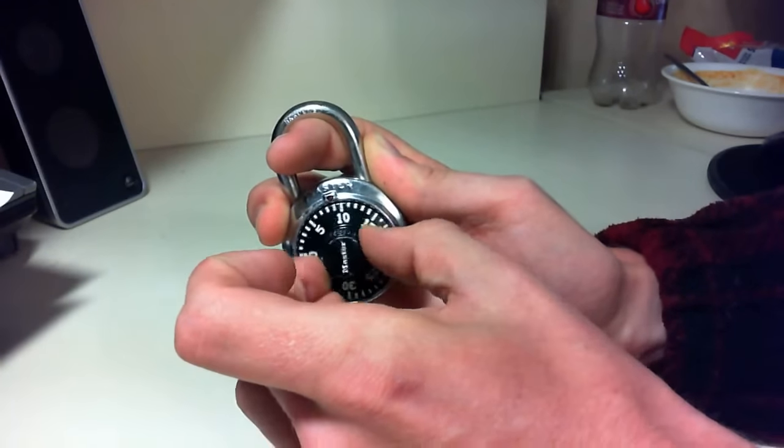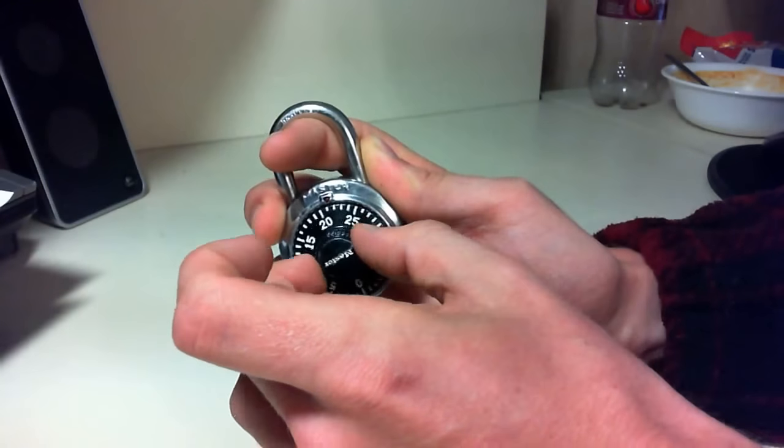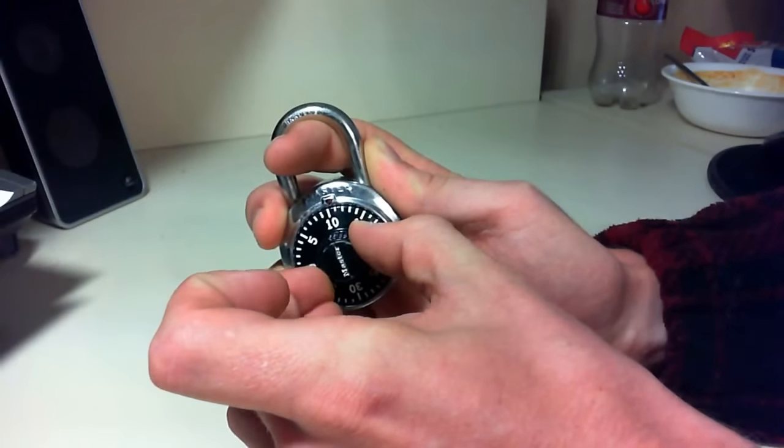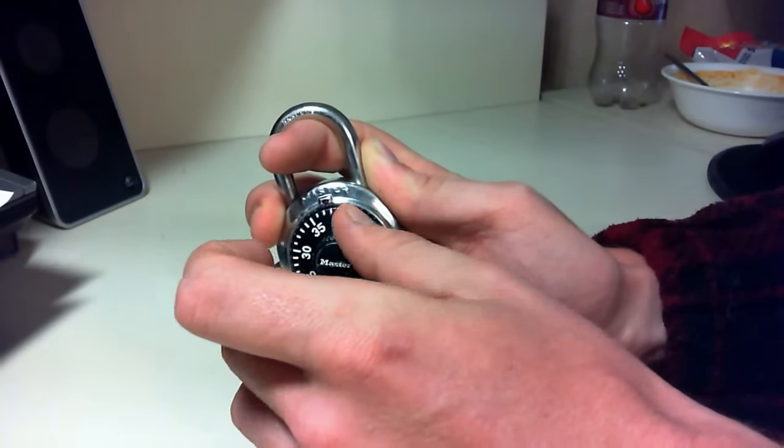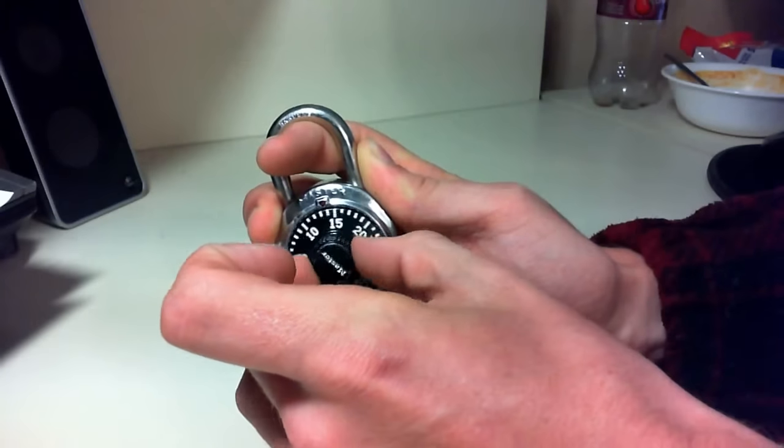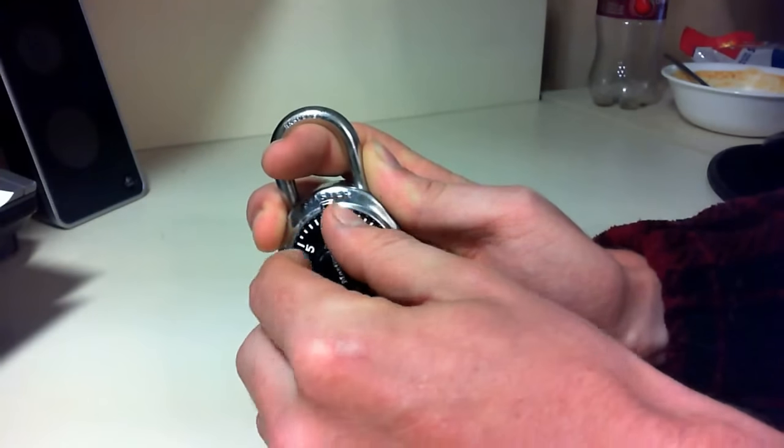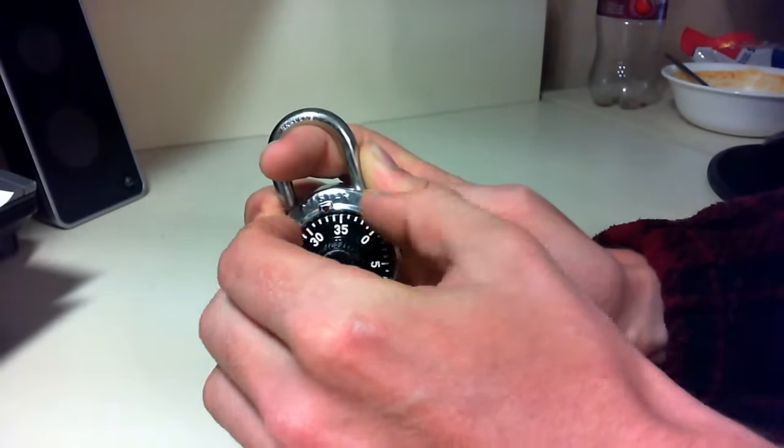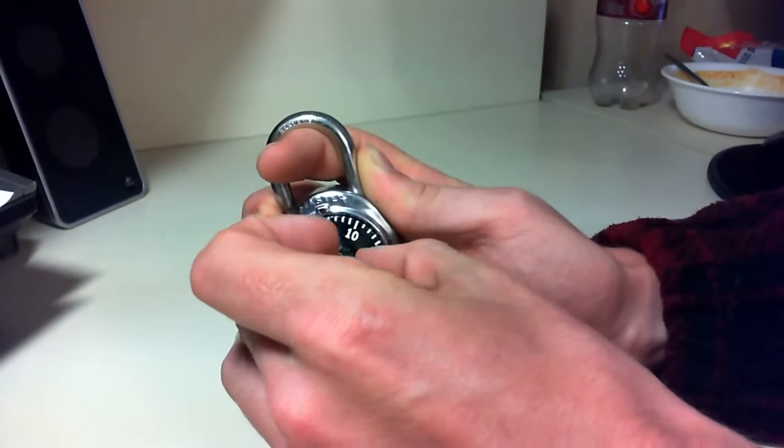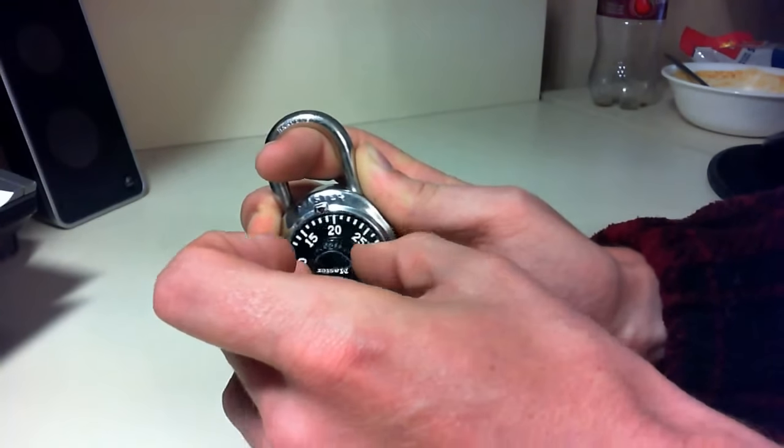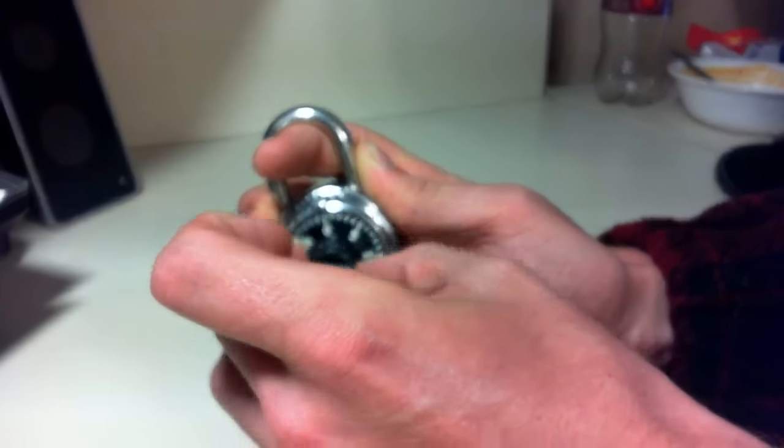So you're going to start by turning it to the right clockwise. You're going to start with a little bit more shackle pressure. And as you turn it, you're going to feel a lot of resistance. As you keep turning, you're going to slowly let off shackle pressure until as you turn the dial around, you'll hear it resist at only one point.